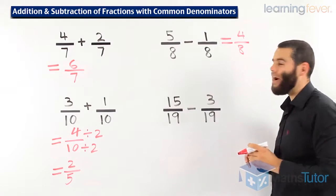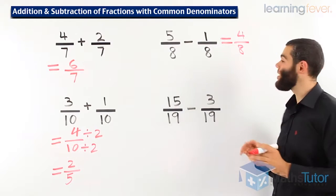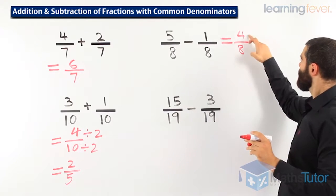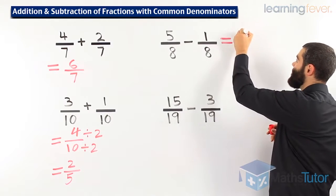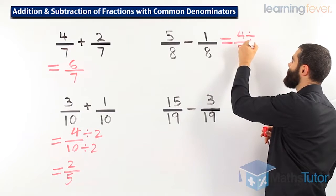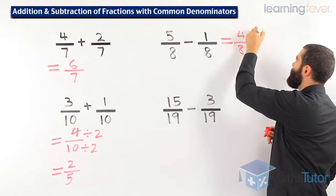Well, that's our answer, but is it simplified? No, we need to simplify it further. 4 over 8, we look for the HCF. In this case, we know the HCF is 4.